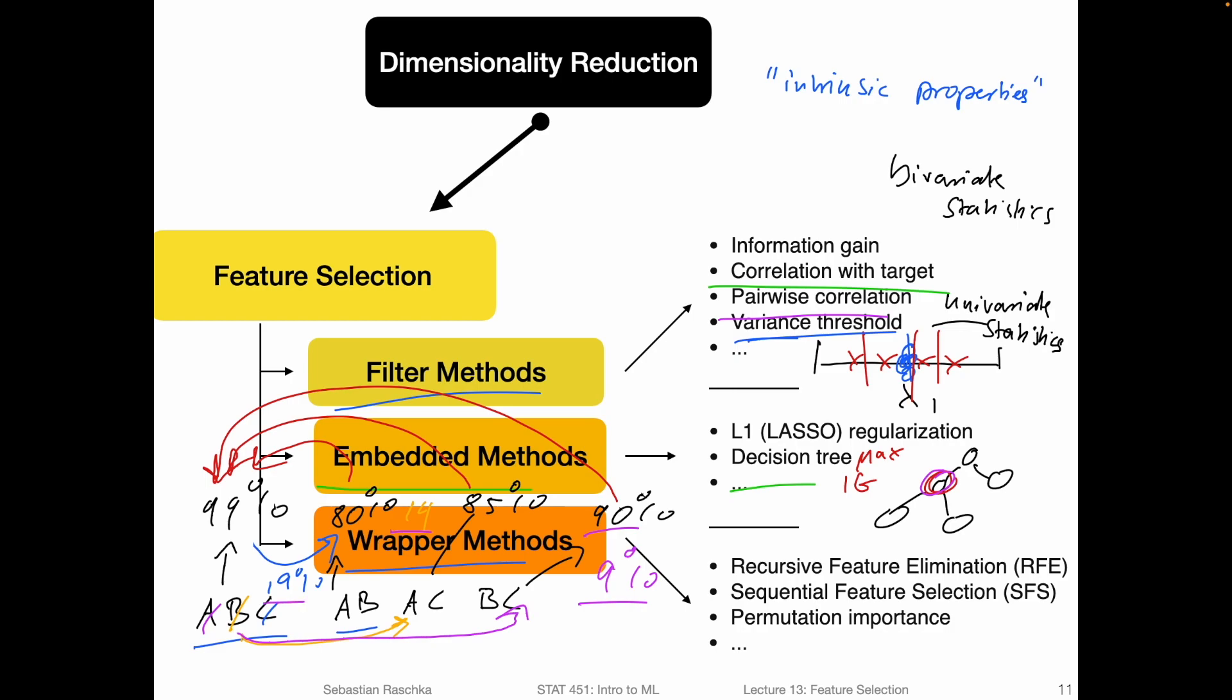Vice versa, we can conclude that A is the least important one, because when we remove it, we only have a 9% drop in accuracy. By using a model and the model accuracy, we can learn about the importance of each feature. We will also see more examples of how we can use these wrapper methods.